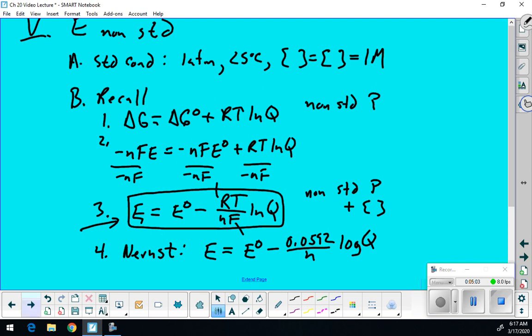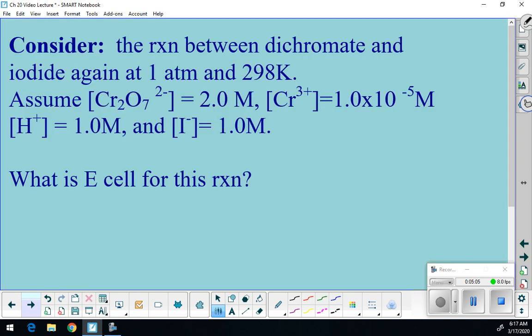So let's take a look at a problem. I have this reaction between dichromate and iodide. It's at 1 atmosphere, 298K. However, my concentrations are not 1 molar. So that means I have a nonstandard situation. So the first thing I kind of need to do is recall what this reaction is. I don't recall, so I better start from the beginning. So I have dichromate. And I know that dichromate is a strong oxidizing agent, so I know it is going to reduce to chromium 3+.